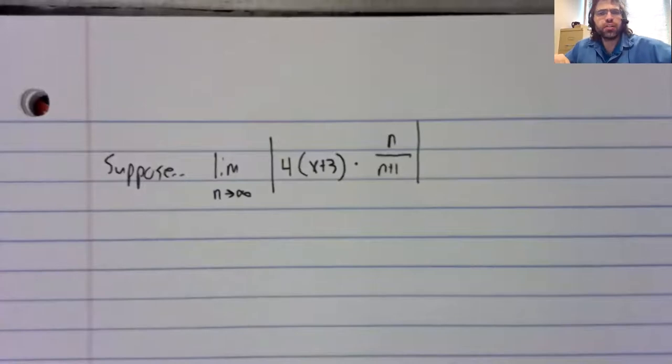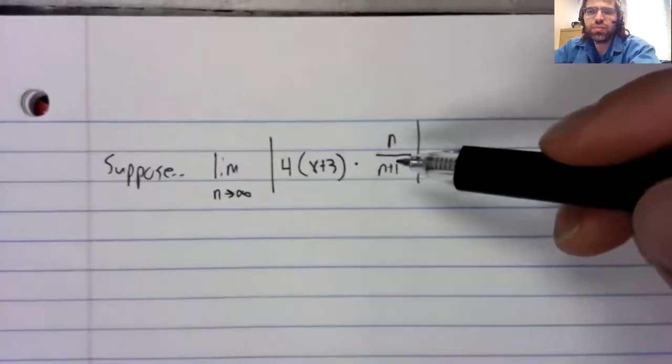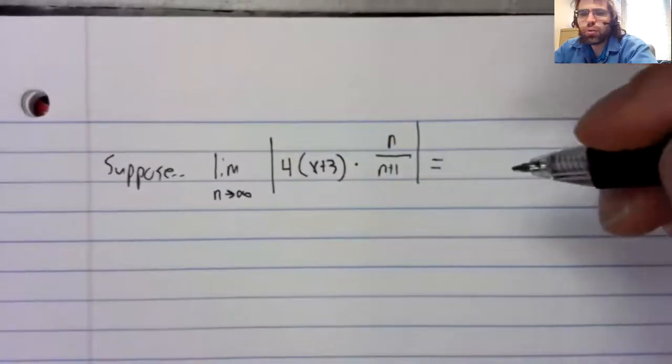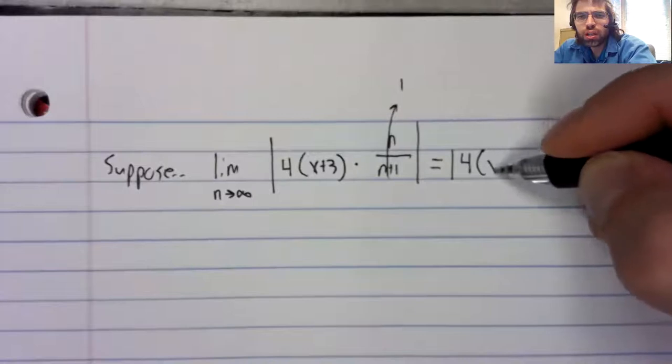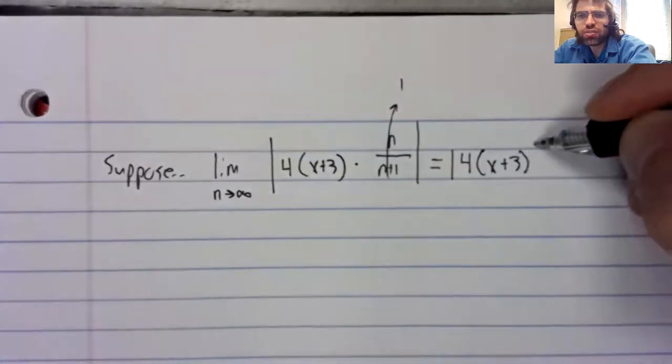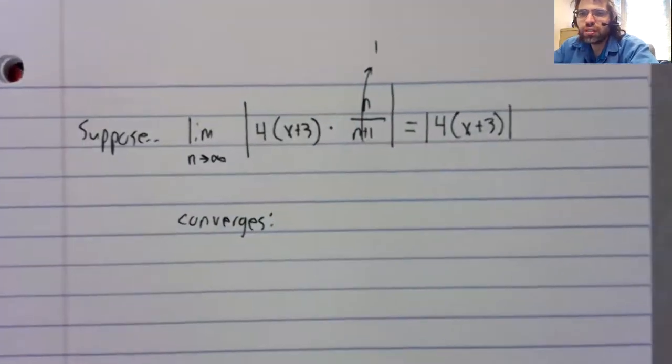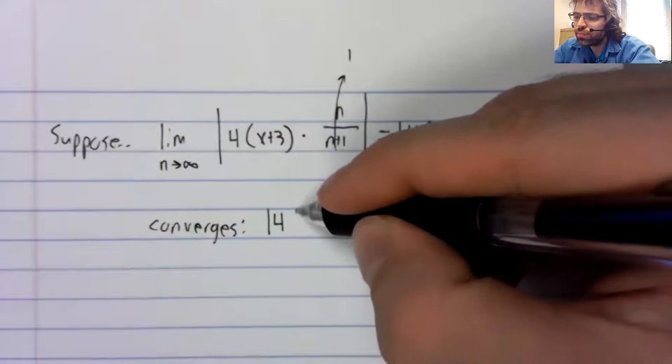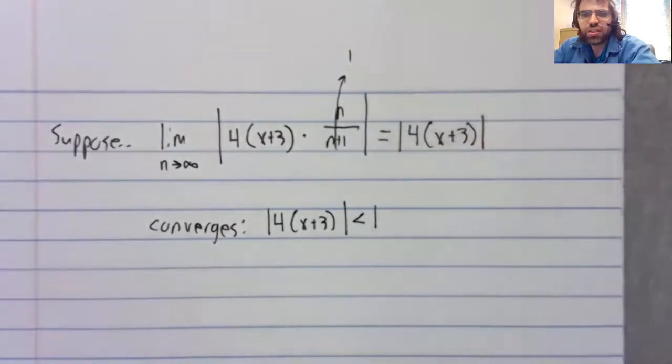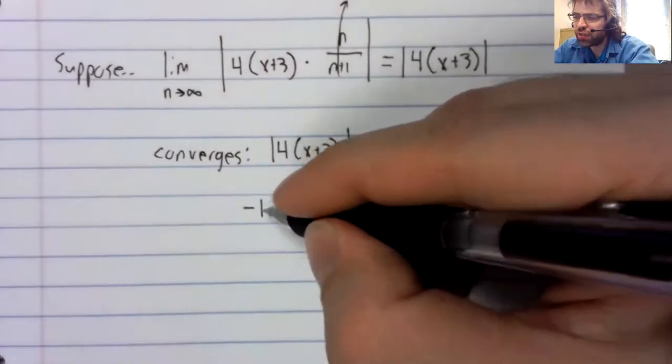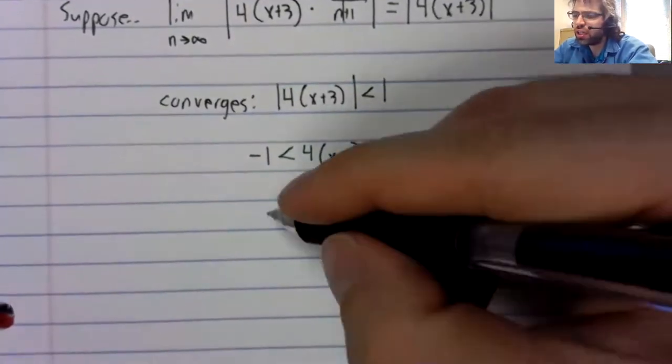Suppose we'd got into the last step and we'd been confronted with this limit. This limit now has x in it. This is going to 1. This limit is 4 times the absolute value of x plus 3. Now you'd have more to do. This series would converge when this is less than 1. So you'd have to set up and solve an inequality.